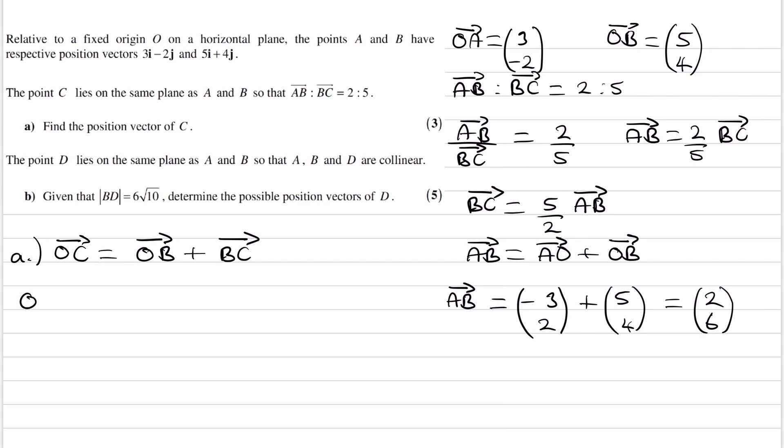So then OC is OB, which is (5, 4), plus BC, which is 5/2 multiplied by AB, which is (2, 6).